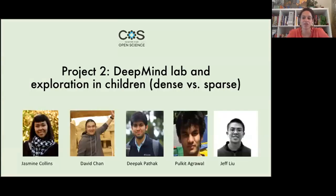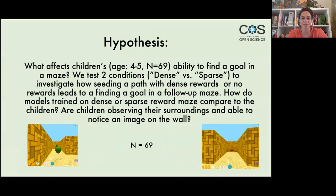Our preliminary work on project one leads us to project two, which is a collaboration with Jasmine Collins, Davin Chan, Deepak Pathak, Polkit Agrawal, and Jeffrey Liu. In this experiment we set out to see how different reward structures affect how children explore the maze and then search for goals.